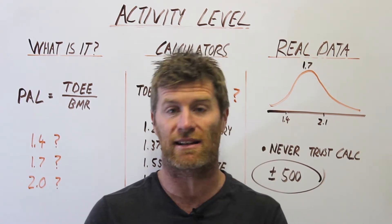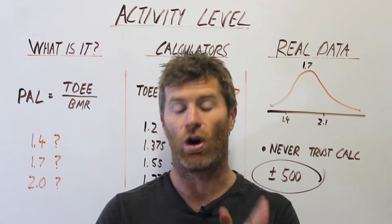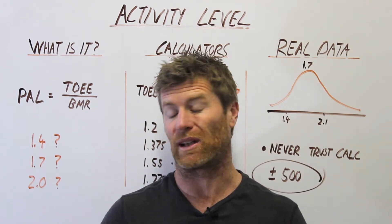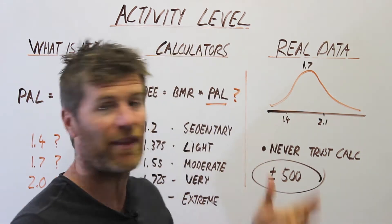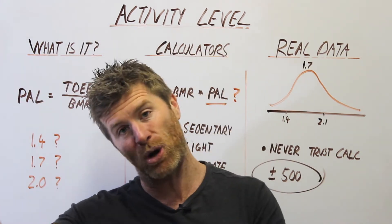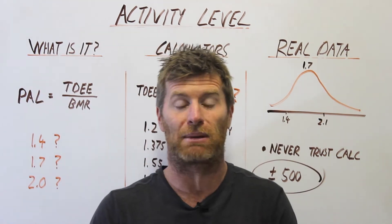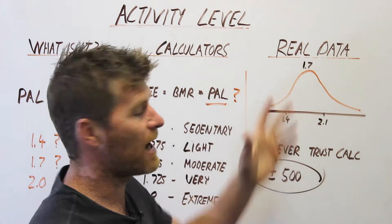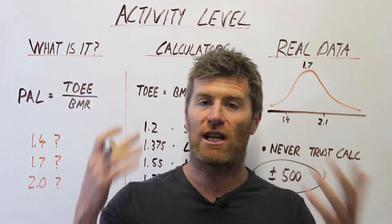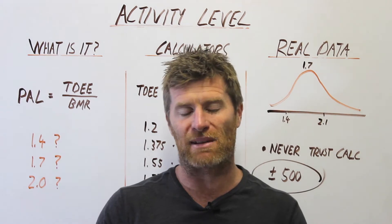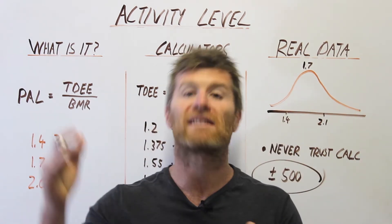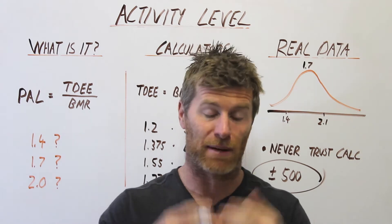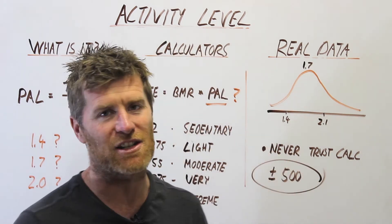There's so much genetics, fidgeting, posture control, job type, exercise amount, whether you've been dieting recently, whether you've been bulking recently — all these things play into your activity level and make it very hard to pin down. So your best bet is to treat everything like a rough estimate, track your progress, and make adjustments. Just be consistent and adjust, because these numbers you'll never actually know.